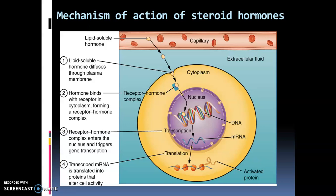There are protein hormones and steroid hormones, and these hormones have different mechanisms of action. Steroid hormones are lipid soluble. When they reach the target organ via the blood, they diffuse through the plasma membrane of the target cell by simple diffusion. Since steroid hormones are lipid soluble and the plasma membrane is made up of a phospholipid bilayer, they can enter into the cell through simple diffusion.